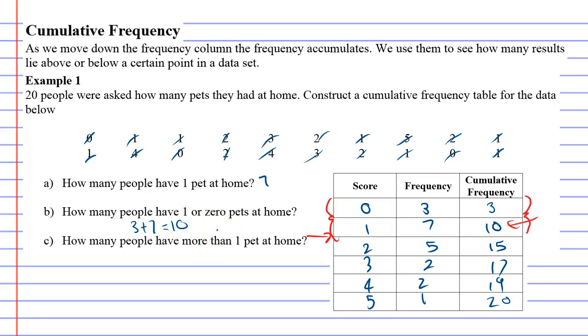Then we look at question C: how many people have more than one pet at home? That's this group of people. These all have more than one pet at home. How many are there? We could quite simply go 5 plus 2 plus 2 plus 1.